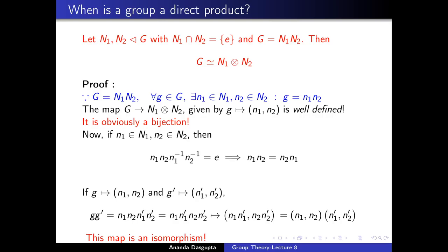The direct product is very simple as a mathematical structure — just two groups each acting in its own way. However, there are many important instances when a big group is made out of two small groups in which the two groups don't really work completely independently. Somehow one gets mixed up with the other, and this is what gives rise to the semi-direct product.